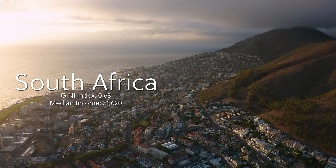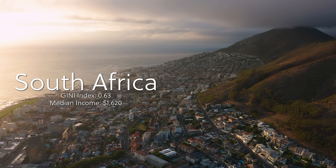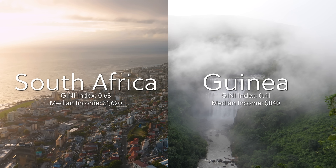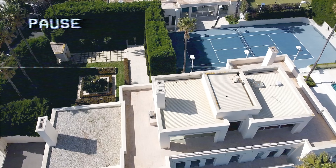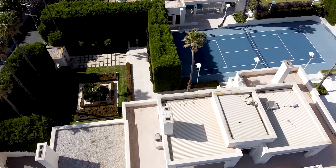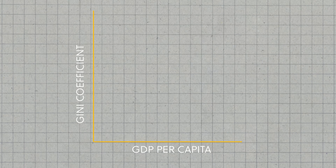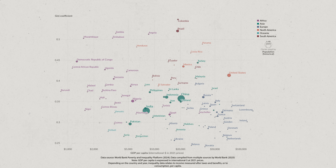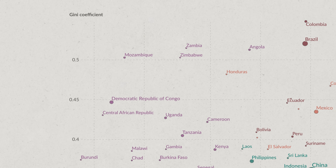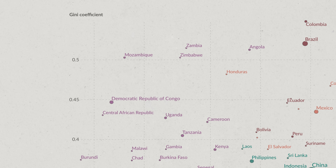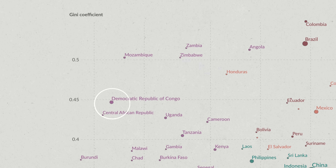But the Gini coefficient doesn't tell us the full story either. For example, South Africa is, by this measure, the most unequal country in the world with a Gini index of 0.63. On the other hand, it still has roughly twice the median income of Guinea. The Gini index measures inequality within a country, but it doesn't take into account the country's overall wealth — which is where GDP per capita re-enters the conversation. When we plot the Gini coefficient on the y-axis and the GDP per capita on the x-axis for all countries globally, note that the size of the circles visually represents the population of those countries. On the bottom right we have countries that are wealthy and experience low-income inequality, such as Norway and the Netherlands. On the top left, we have countries which experience widespread poverty as well as highly unequal societies, such as Mozambique and the Democratic Republic of the Congo.